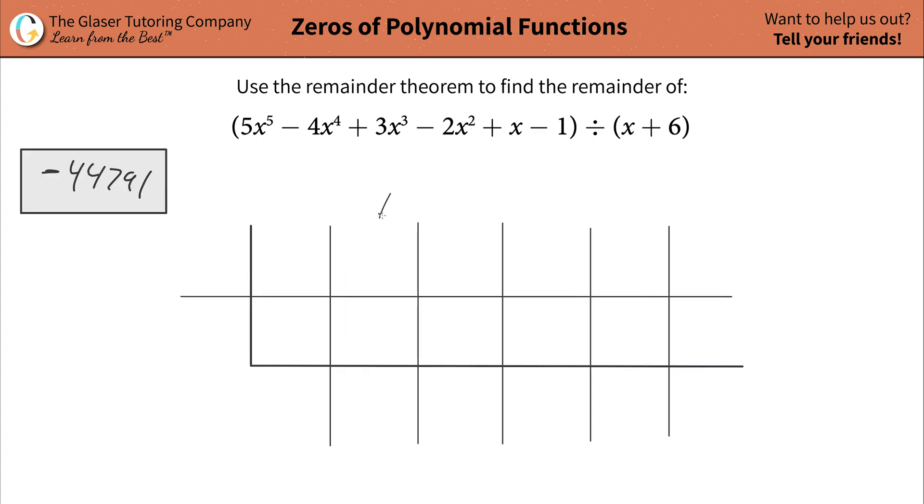So to figure out the number of columns here that should go into your synthetic division table, you have to look at the highest power of x and add 1 to it. So I know that I need 6 columns. So this is going to represent the x to the 5th coefficient. This is x to the 4th. And we're going to keep on counting down here until we get to our constant.